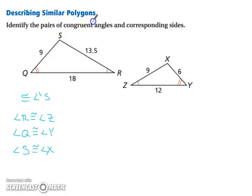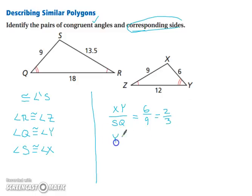That covers congruent angles. Now, we need corresponding sides. We have XY over SQ equals 6 over 9, which reduces to 2 thirds. We have YZ over QR, which gives us 12 over 18, which also reduces to 2 thirds.